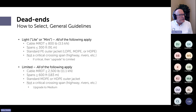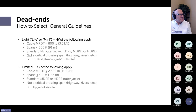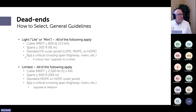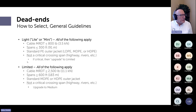Light dead ends can be used if all of the following apply: cable MRDT or MRCL less than 800 pounds (3.5 kN), spans less than 300 feet, a standard polyethylene outer jacket (LDPE, MDPE, or HDPE are all acceptable), and the span is not a critical span. If it crosses a highway, river, or other important feature, upgrade to the next class — limited.